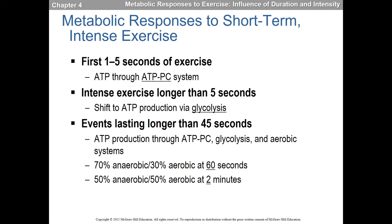Here's how the energy systems work by duration. For the first five seconds, exercise is almost entirely the phosphocreatine system. Once it lasts longer than five seconds, we shift to glycolysis — specifically anaerobic glycolysis, producing lactate instead of pyruvate, because there's not enough time to get pyruvate into the Krebs cycle. Once things last longer than 45 seconds, there is a mixture of all three systems. At about 60 seconds it's roughly 70/30 anaerobic to aerobic, and at around two minutes it's about 50/50.